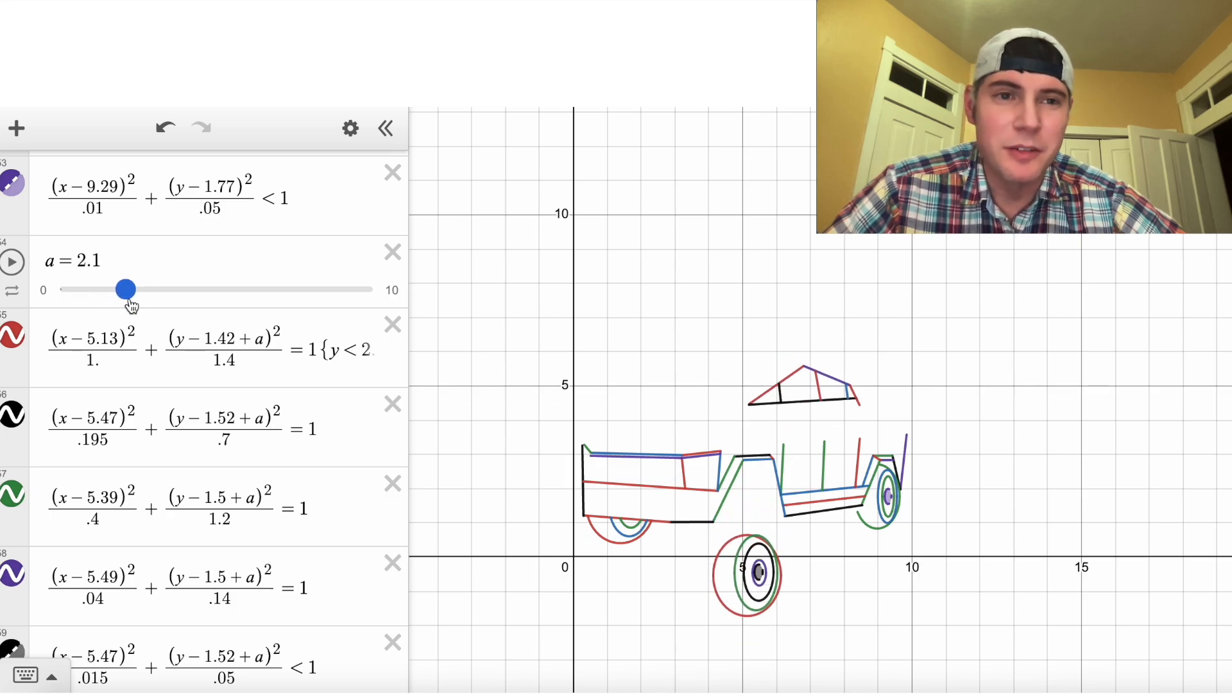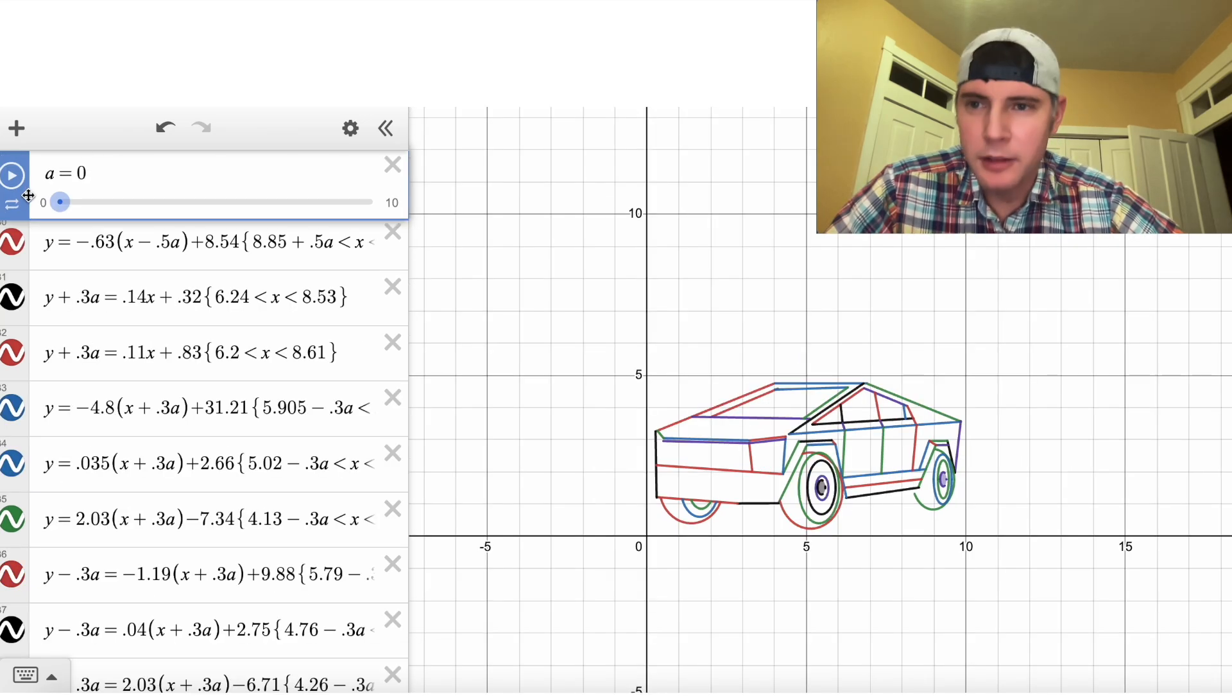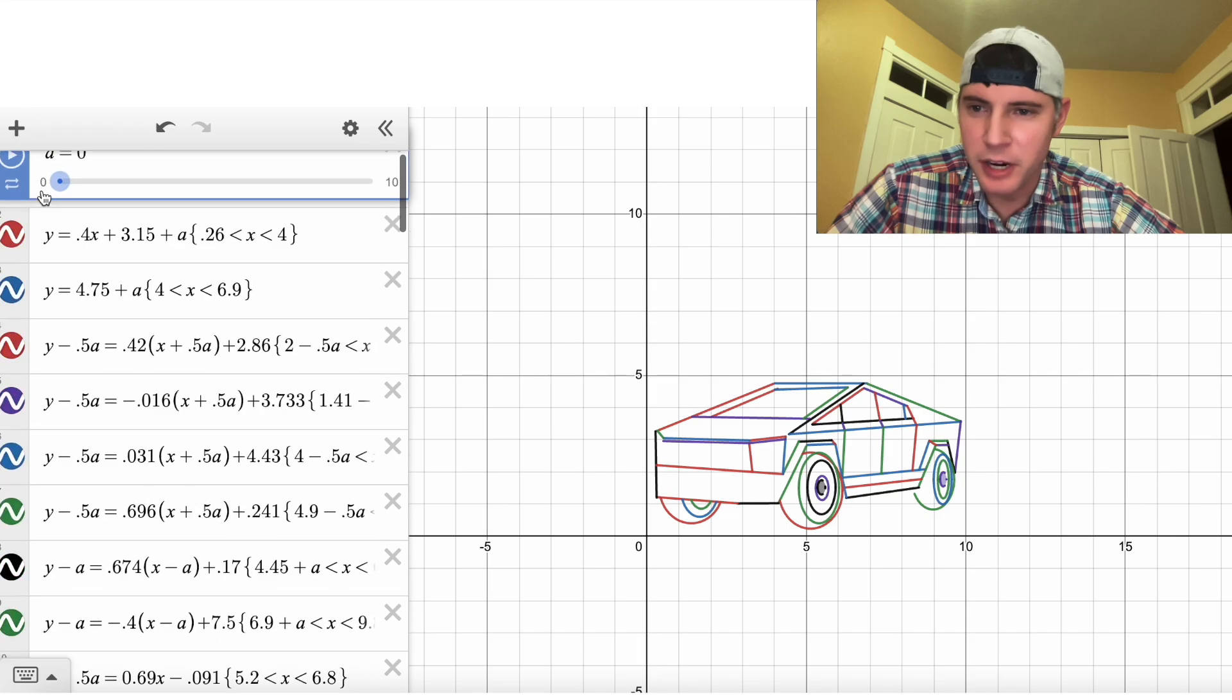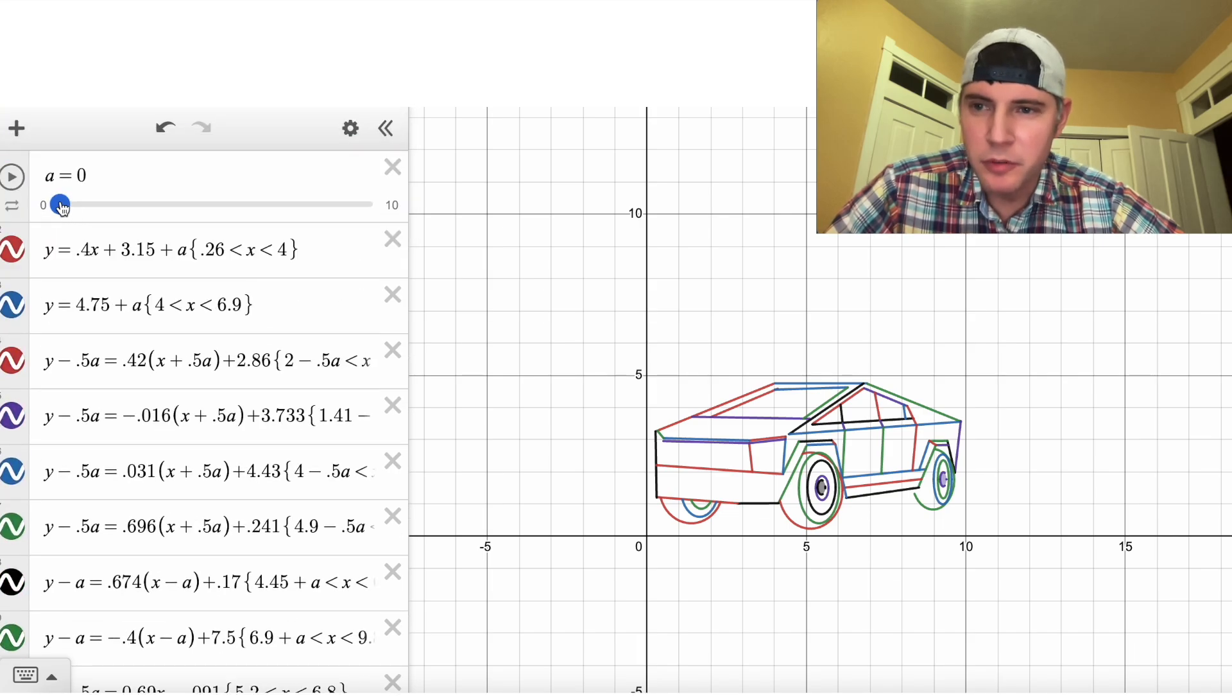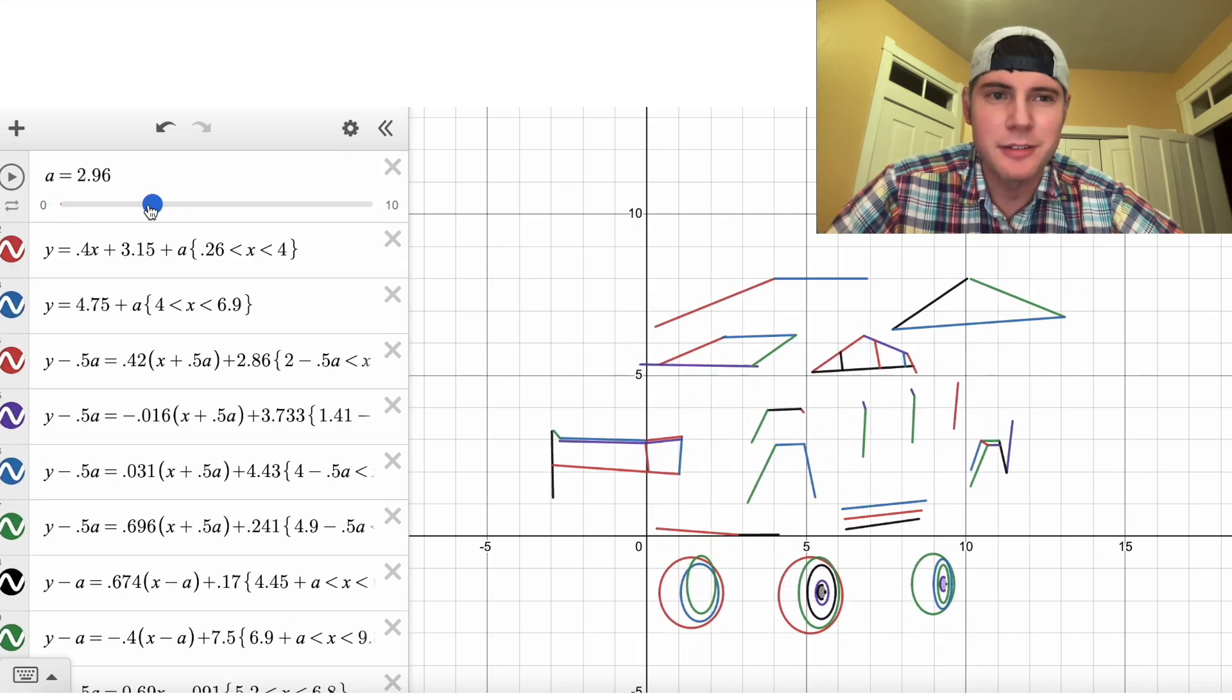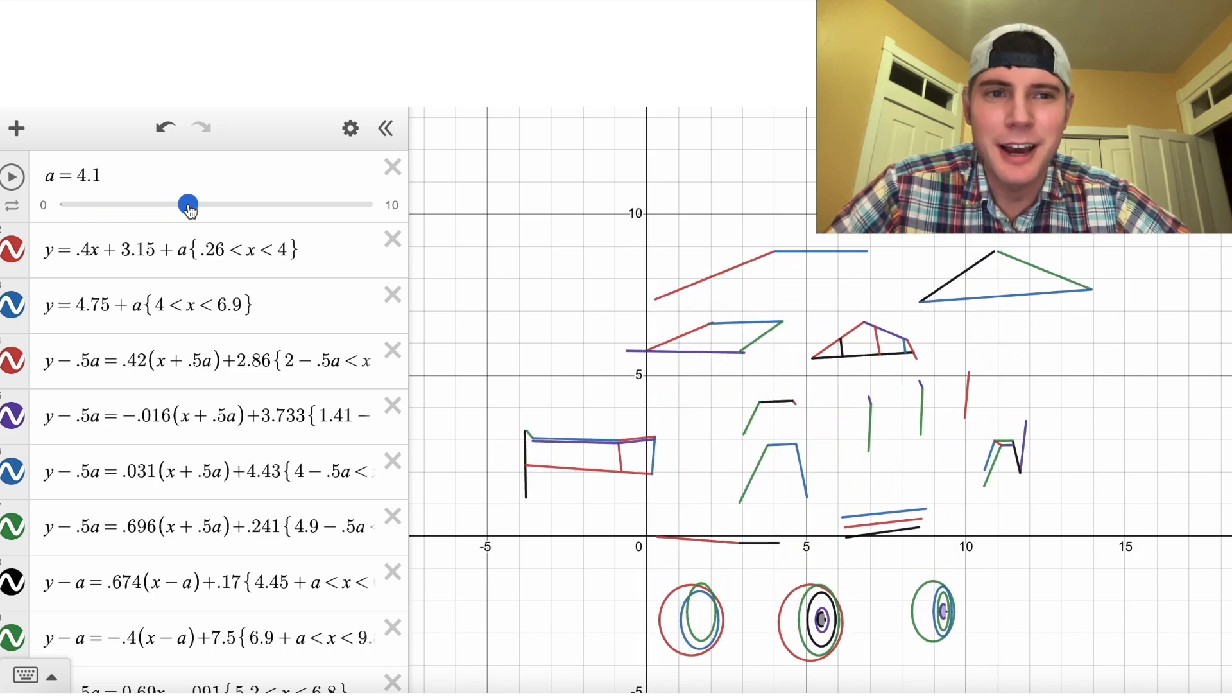And then you're just going to repeat the same thing for everything that you want grouped together. And then once again, here it is all finished where I added A to all of them. And when I move this, now the whole thing breaks apart. And that's how it's done. How exciting.